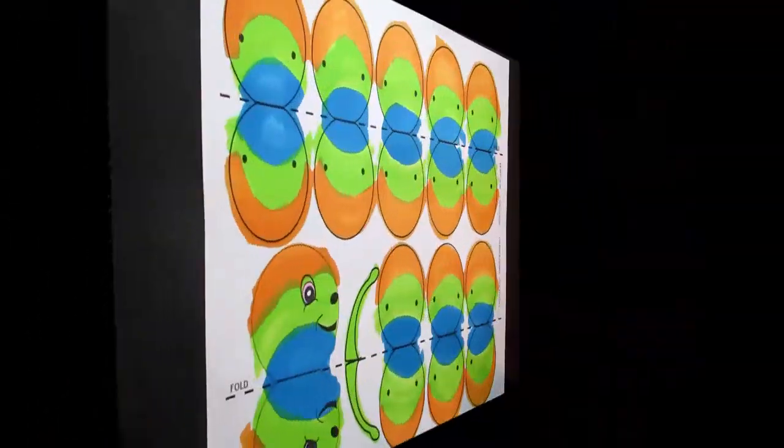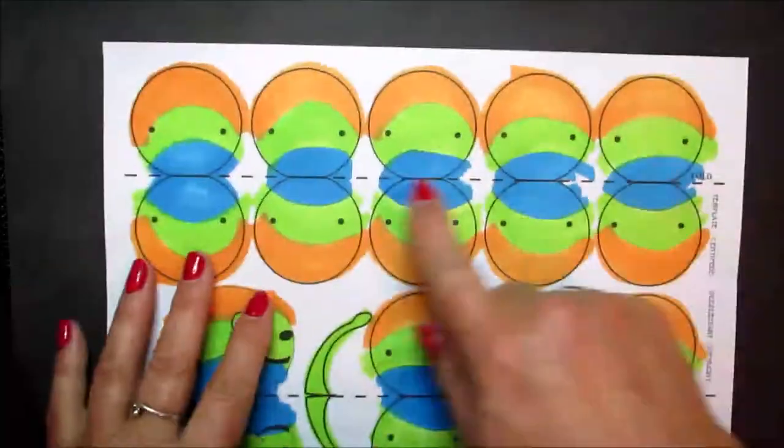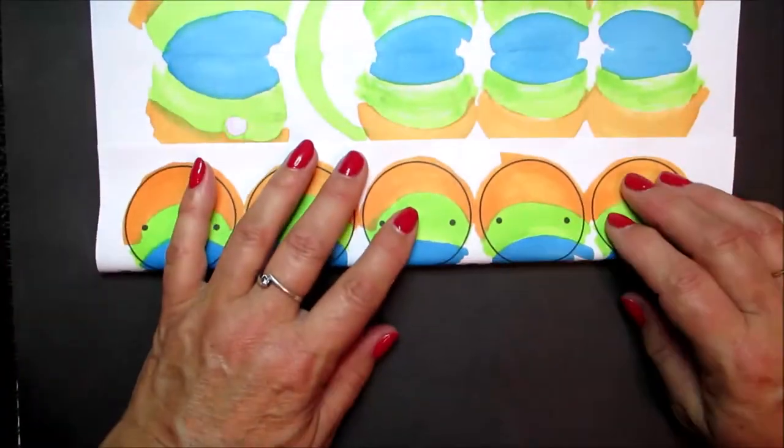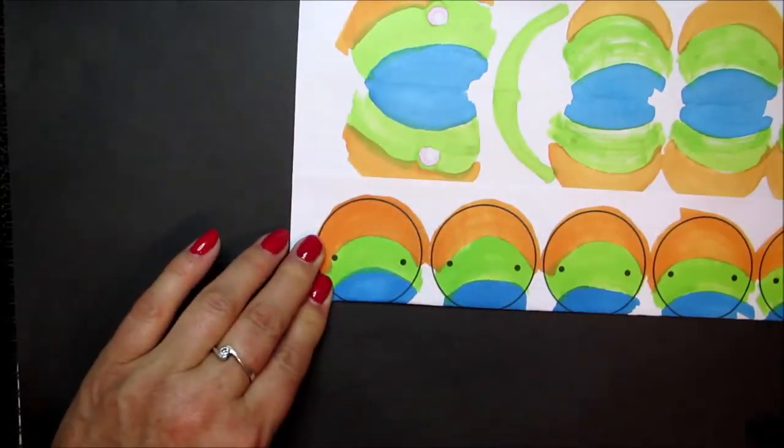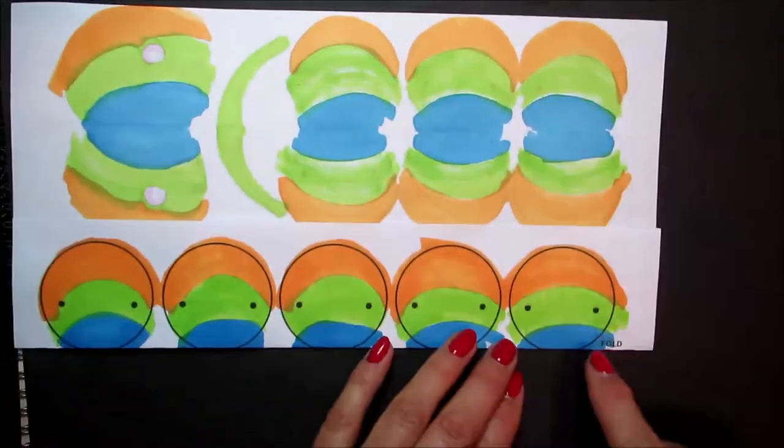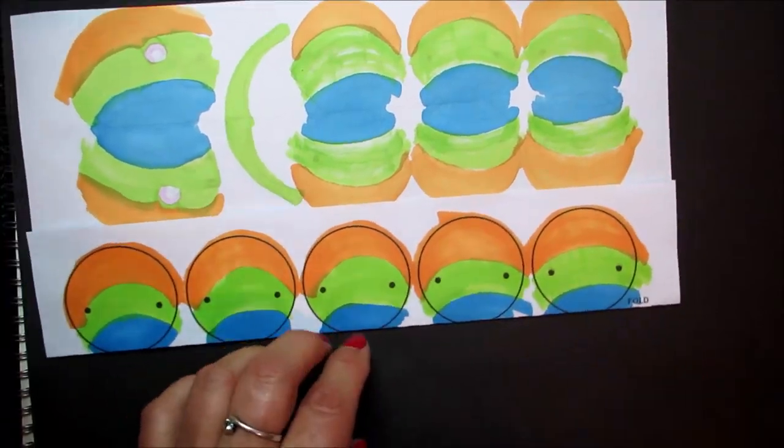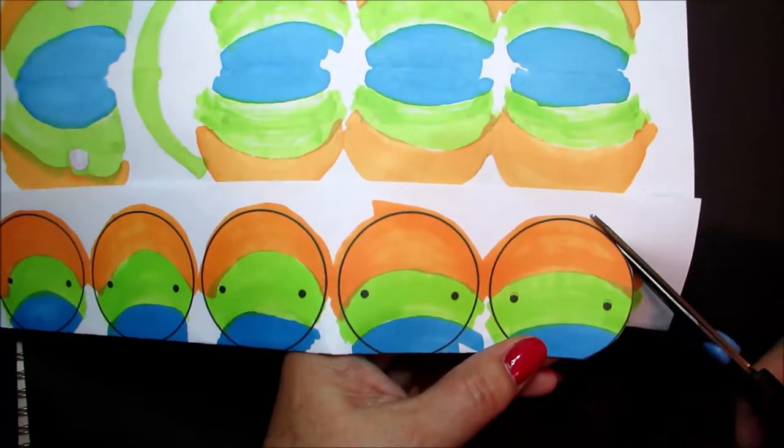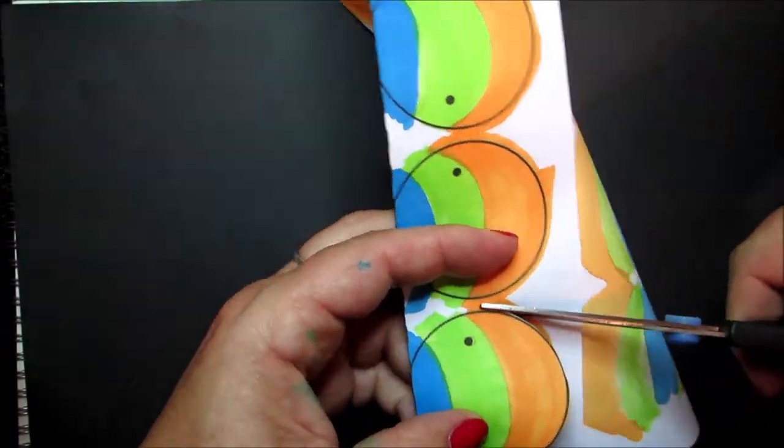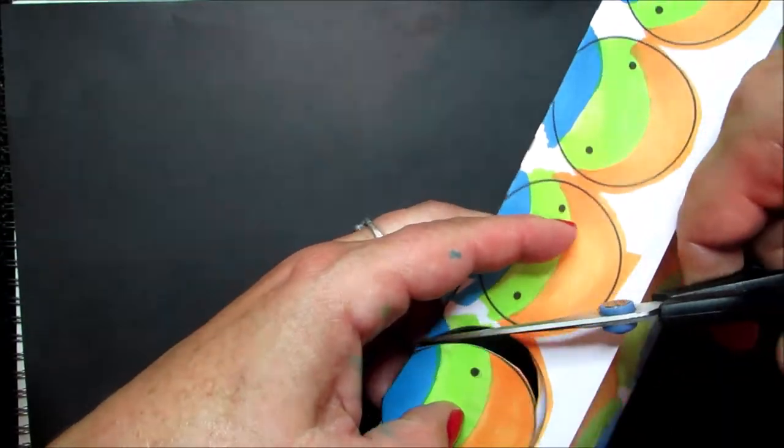When you've coloured in your centipede you then need to fold along this top fold line. Make sure this is very straight and accurate. And then we're going to cut around each of these pieces. So very carefully cut around these black lines. Don't cut along that folded edge.